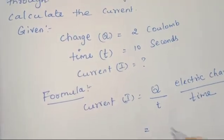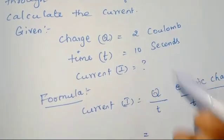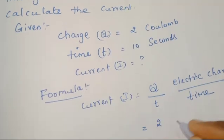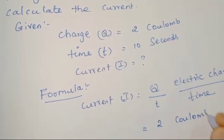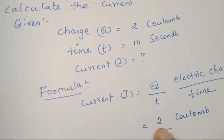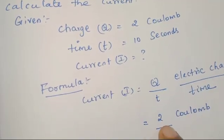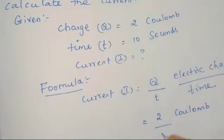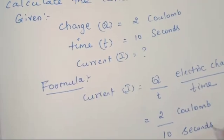Then we can substitute. The Q value and T value are already known. Measurement has two parts: one is the number and the other is the unit — without a number or without a unit, you should not write. So, I is equal to 2 coulomb divided by 10 seconds.